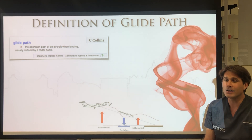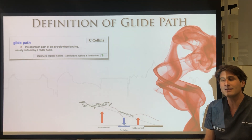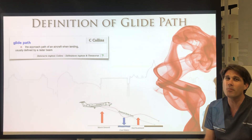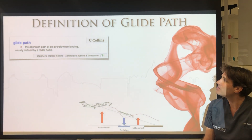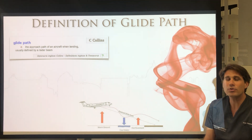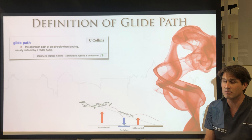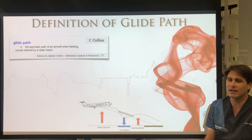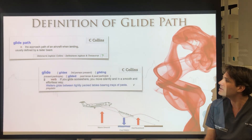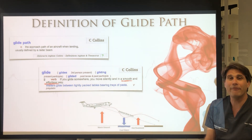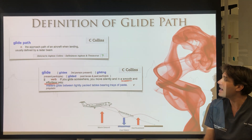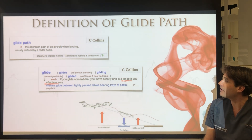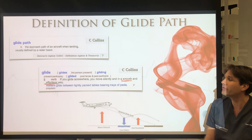When defining GlidePath, it is curious that this definition comes from an aeronautical field, because the GlidePath is defined as the approach path of an aircraft when it is landing, usually defined by a radar beam. The other curiosity is the terms used in this aeronautical field to describe the GlidePath — these terms are smooth and effortless. The aircraft should move silently, in a smooth and effortless way.